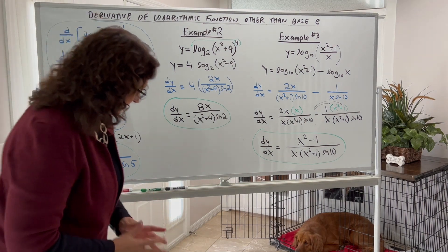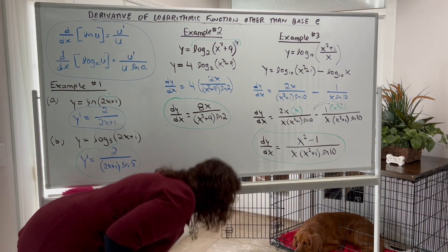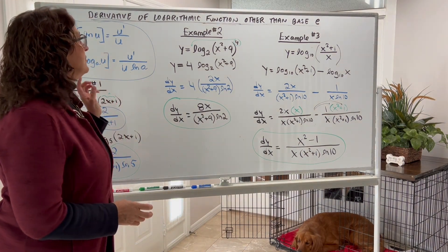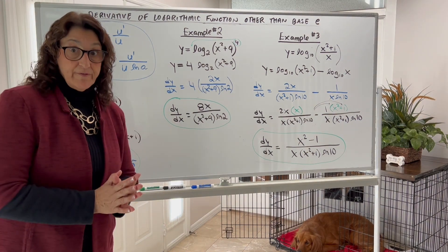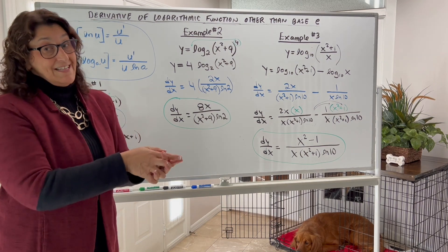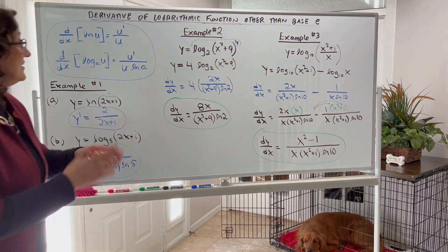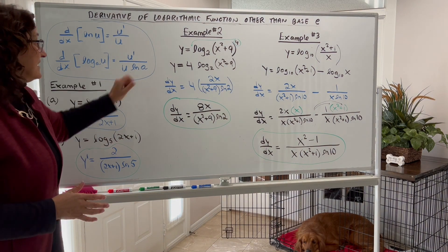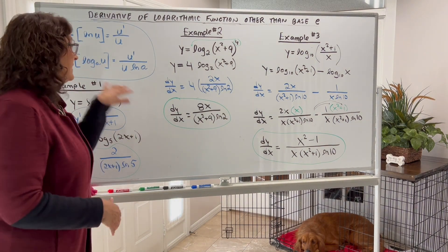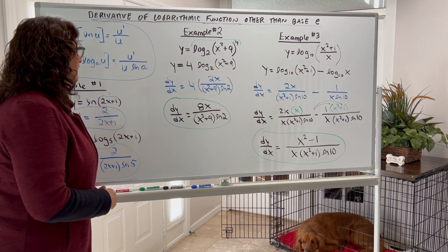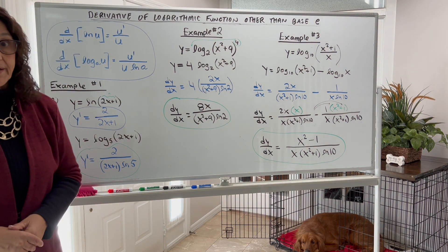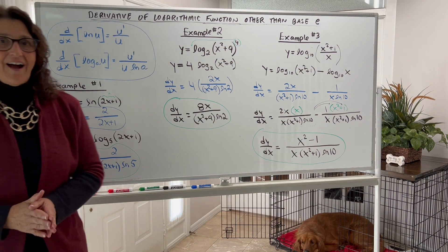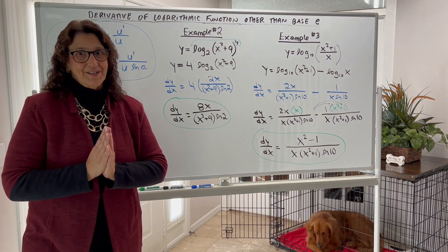And that's it. So here is how we find derivatives of logarithmic functions when the base is not e. When the base is e, it's u prime over u, but when the base is not e, you've got that extra natural log of the base component to put into the denominator. So here's how these formulas work. I hope this helps — thank you so much for watching, take care.